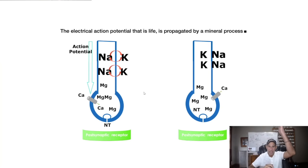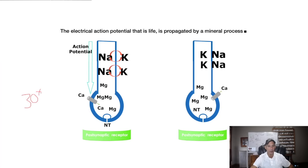That sodium-potassium action potential will eventually stimulate the voltage-gated calcium channels once we hit positive 30 millivolts. That opens the voltage-gated calcium channels, allowing calcium to flood in. Calcium is the impetus that moves the vesicle containing the neurotransmitter to the cleft so the neurotransmitter can be released.